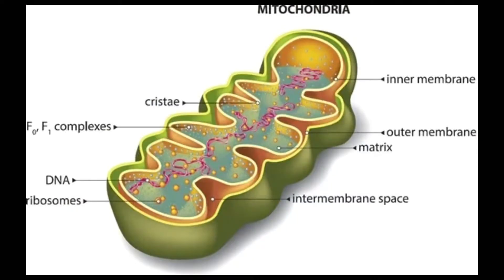The first one is mitochondria, which are the powerhouses of the cell. These tiny rod-shaped organelles convert chemical energy into energy that can be used by the cell.